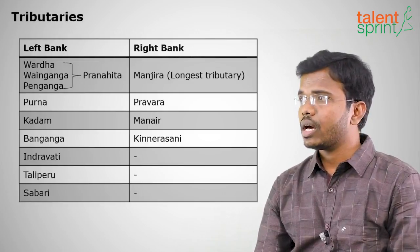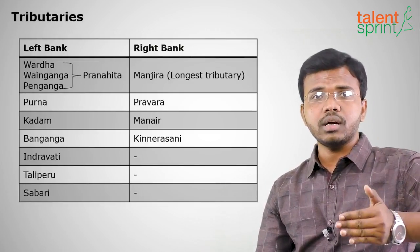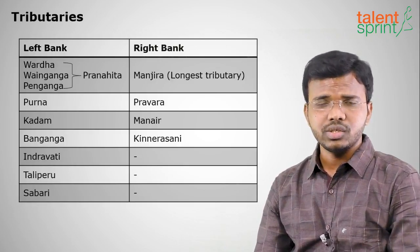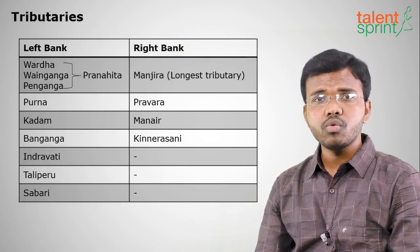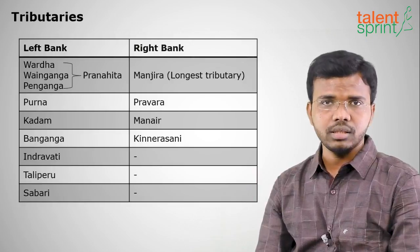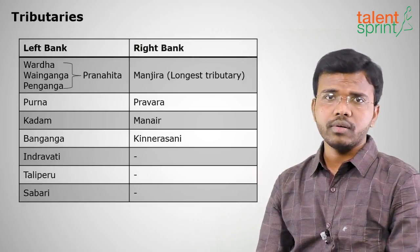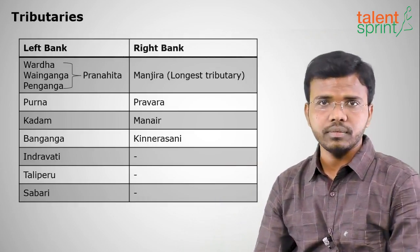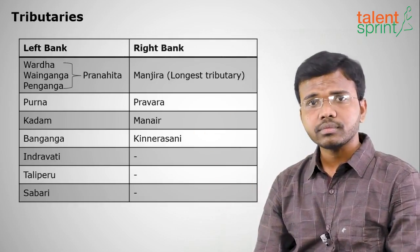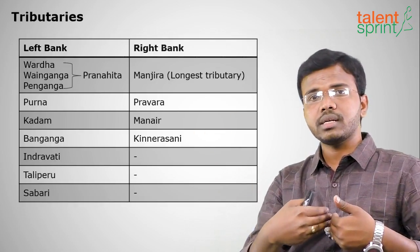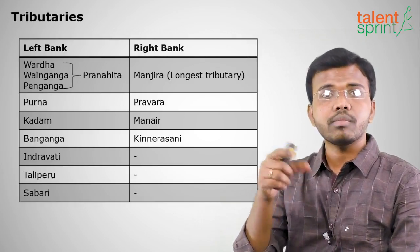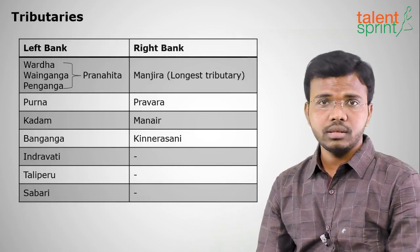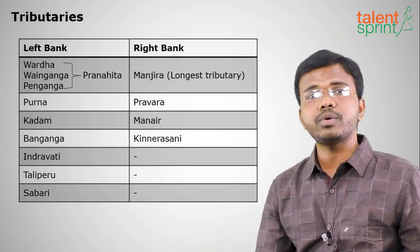The left bank tributaries of the Godavari are Varda, Ven Ganga, and Pen Ganga — these generally originate from Maharashtra. They confluence and move together as Pranahita, forming a Triveni Sangamam in Karimnagar district of Telangana. Other left bank tributaries include Purna, Kadam, Vanganga, Indravati, Taliperu, and Shabari.